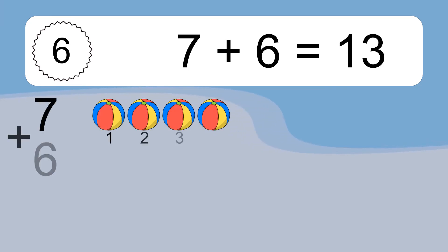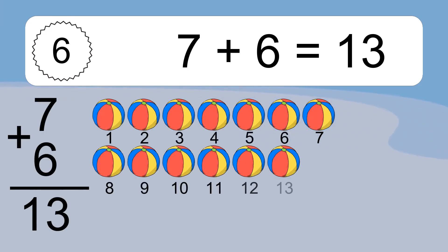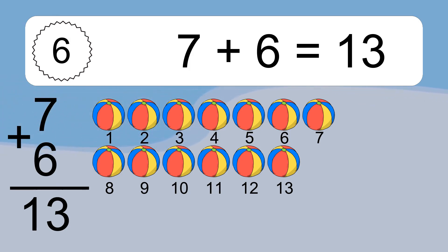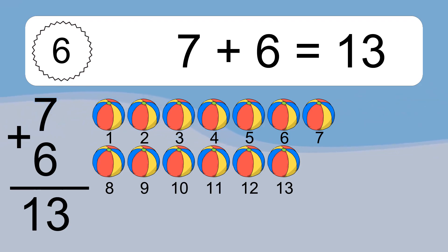7 plus 6 equals 13. Let's count it. 1, 2, 3, 4, 5, 6, 7, 8, 9, 10, 11, 12, 13.